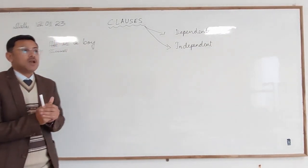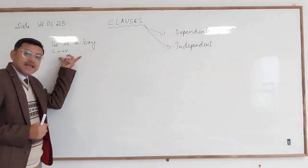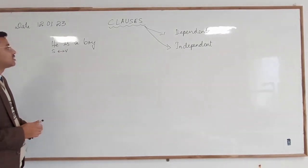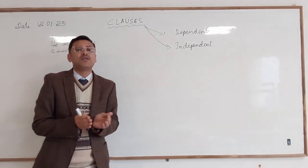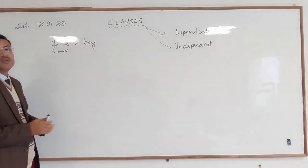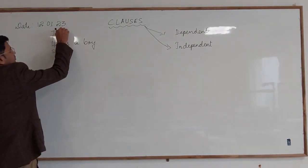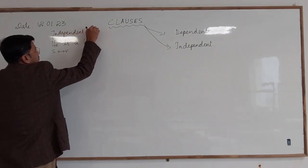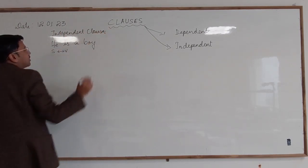Independent clauses are the ones which alone make a meaningful sentence. Like in this sentence, 'He is a boy' makes proper sense. It doesn't need anything to depend upon, so therefore this kind of clause is known as an independent clause.